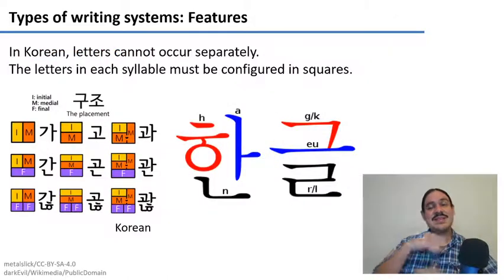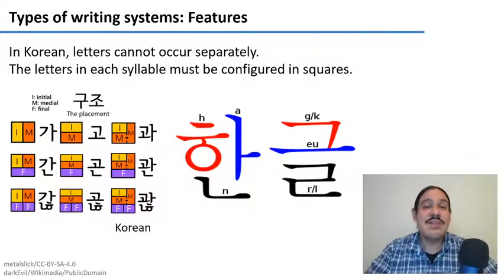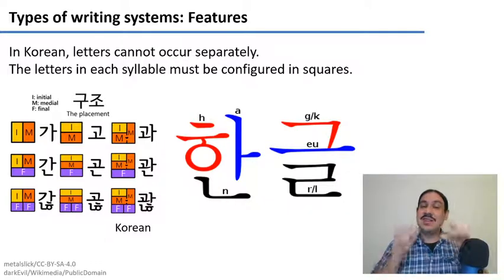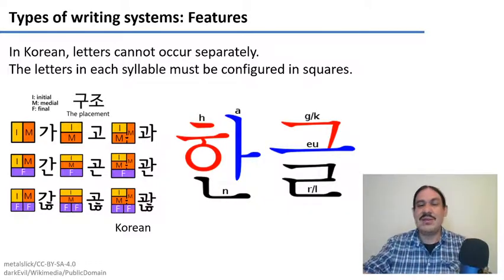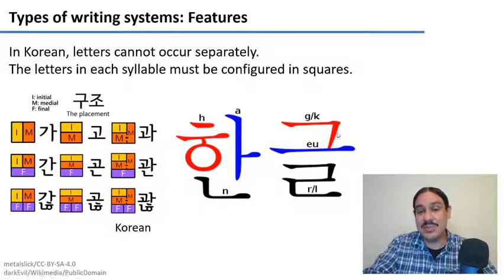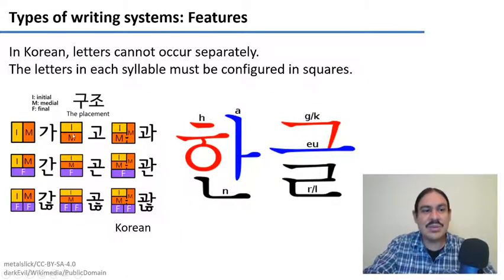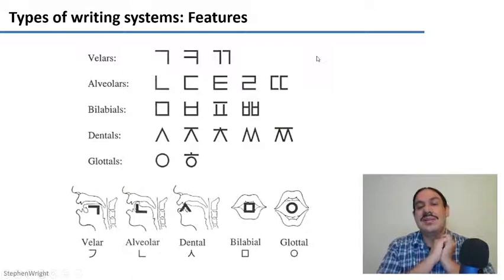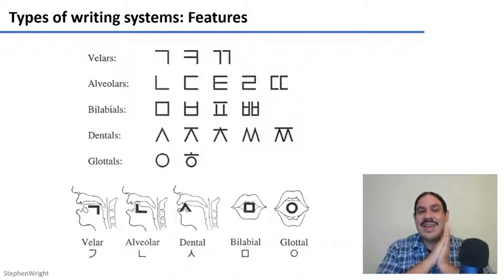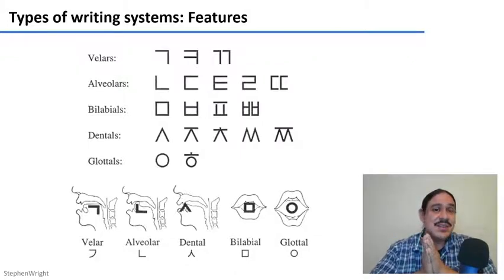Korean uses a very interesting alphabet. First, it's not linear — it's not one symbol after the other. What comes in sequence is the syllables, and the syllables must be arranged in squares with an onset, nucleus, and coda in a limited number of arrangements. More importantly, this system was deliberately invented by a king called Sejong in the 1400s, who made the shapes of the letters according to the shape your tongue makes when pronouncing them.